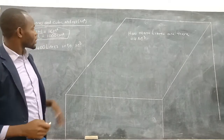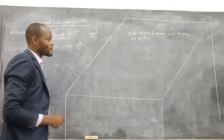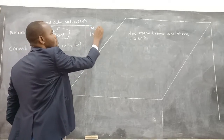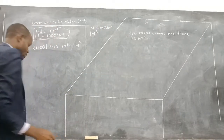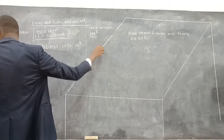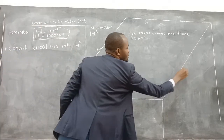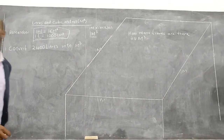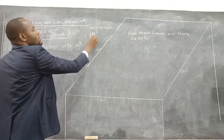For now, you can think of 1 meter cubed — how does it look like? This means it is 1 meter times 1 meter times 1 meter. Can you see this example? This is 1 meter, this is also 1 meter, and also this one is 1 meter. So if you get the volume of that figure, you are supposed to get 1 meter cubed.